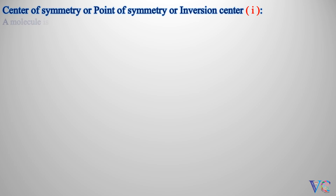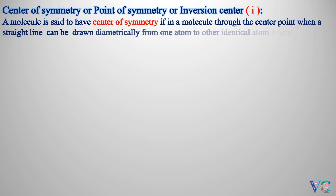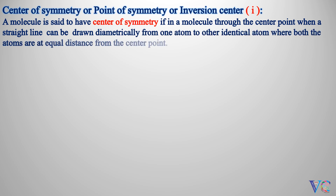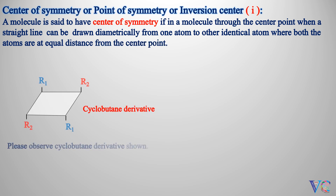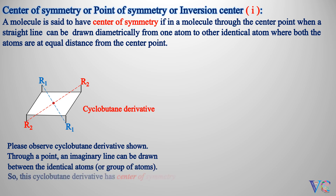A molecule is said to have a center of symmetry if, through the center point, a straight line can be drawn diametrically from one atom to another identical atom, where both atoms are at equal distance from the center point. Please observe the cyclobutane derivative shown — through the center point, an imaginary line can be drawn between identical atoms or groups of atoms. So this cyclobutane derivative has a center of symmetry.